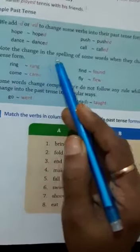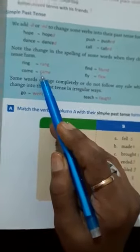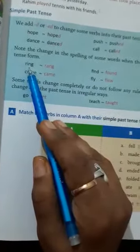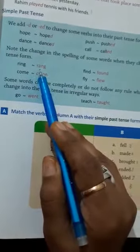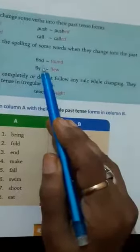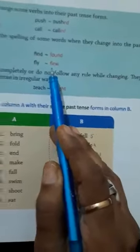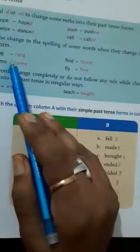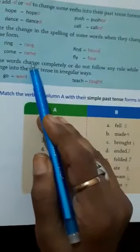Now see the change in the spelling of some words when they change into the past tense forms. Some words, we change only spellings. You can see ring - the spelling of ring changes to rang. Hang becomes hung, find becomes found, come becomes came, fly becomes flew. You can see in past tense ring became rang, find became found, come became came, fly became flew. In this way you will change the spelling.